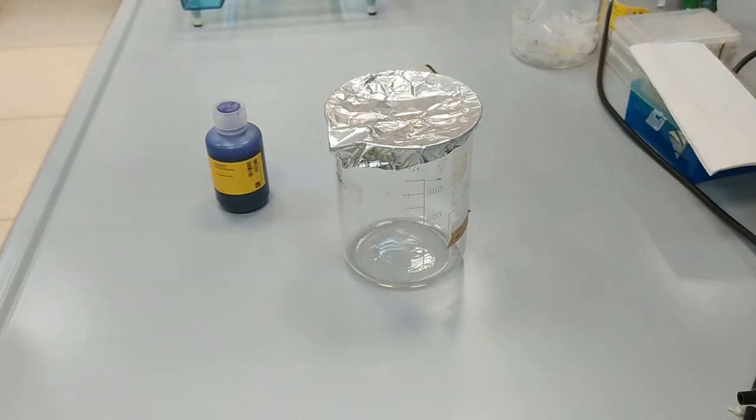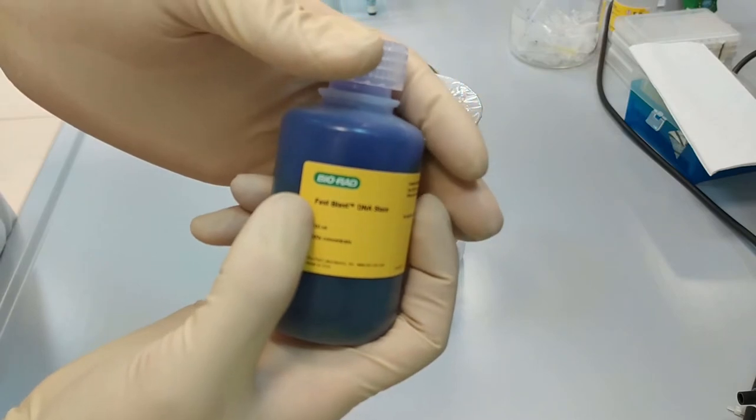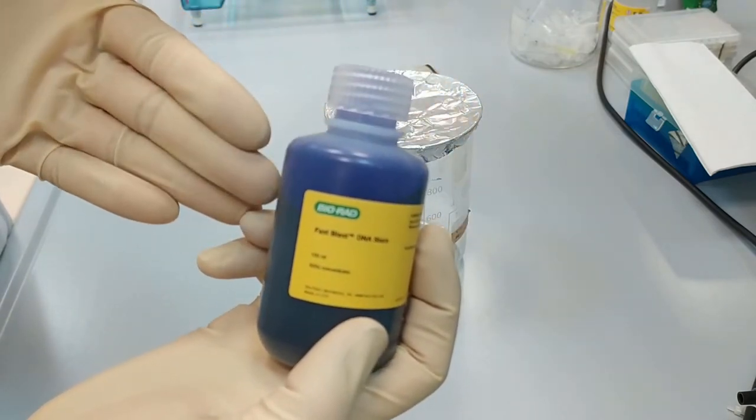Okay, so now we are preparing the Fast Blast. It is the dye that we are going to color the bands with DNA.